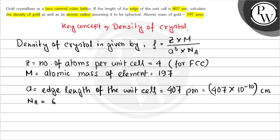So the value of rho will be: z is 4, m is 197, then a is 407 times 10 to the power minus 10 whole cubed, times Avogadro's number that is 6.023 times 10 to the power 23.